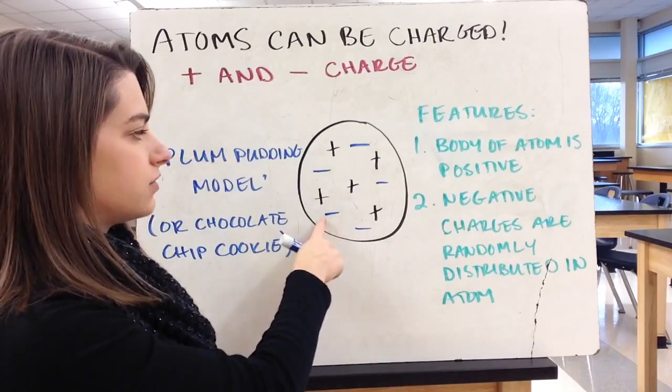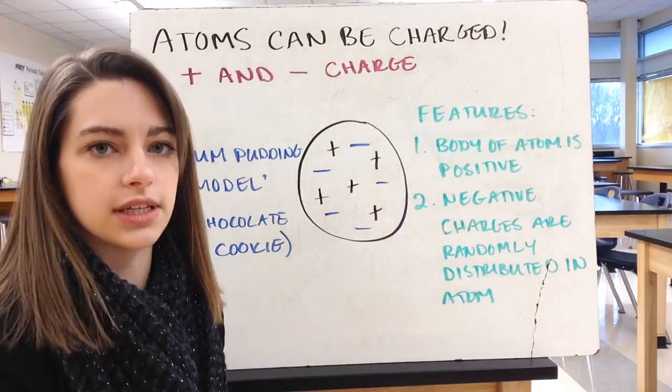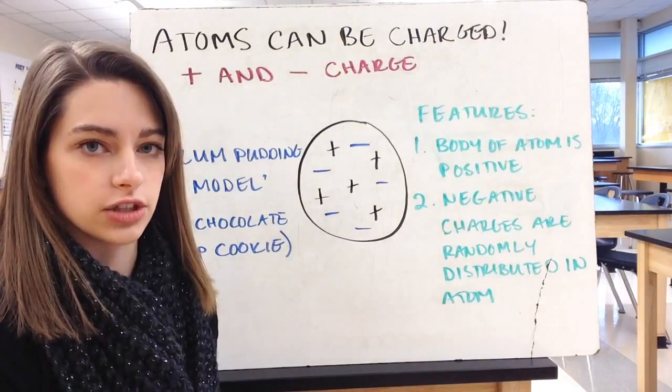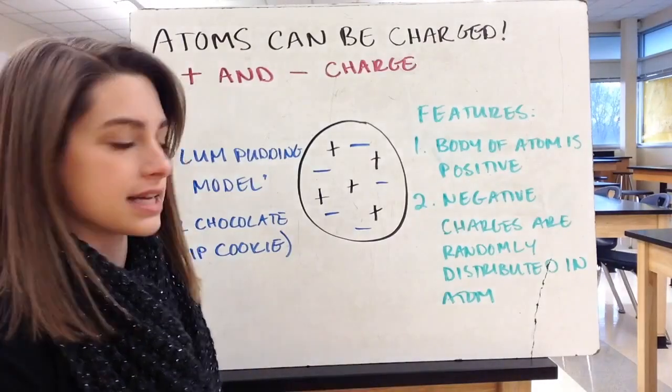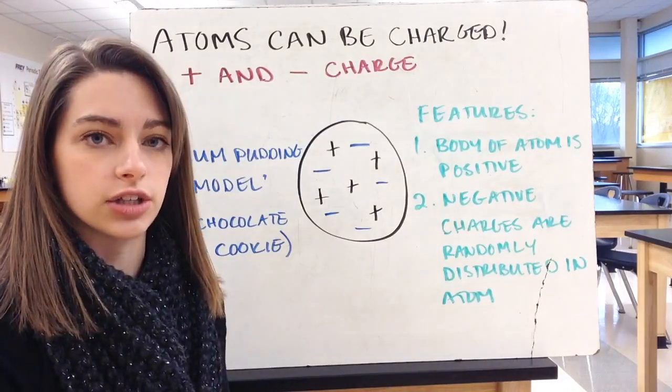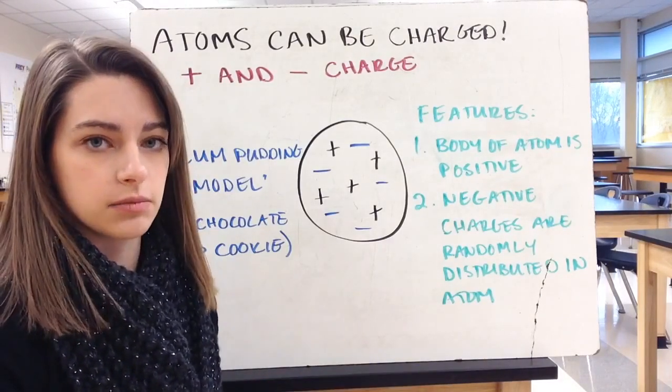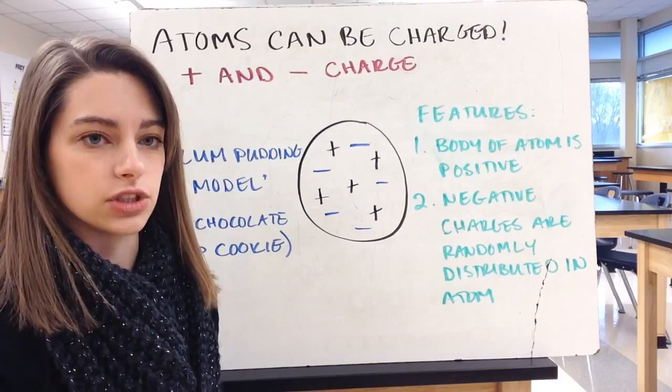And then it has negative charges randomly distributed throughout the atom. So if you think of the dough part of your chocolate chip cookie is positively charged, and then the chocolate chips are the negatively charged pieces. So those are the pieces that are randomly distributed through your positively charged cookie dough.